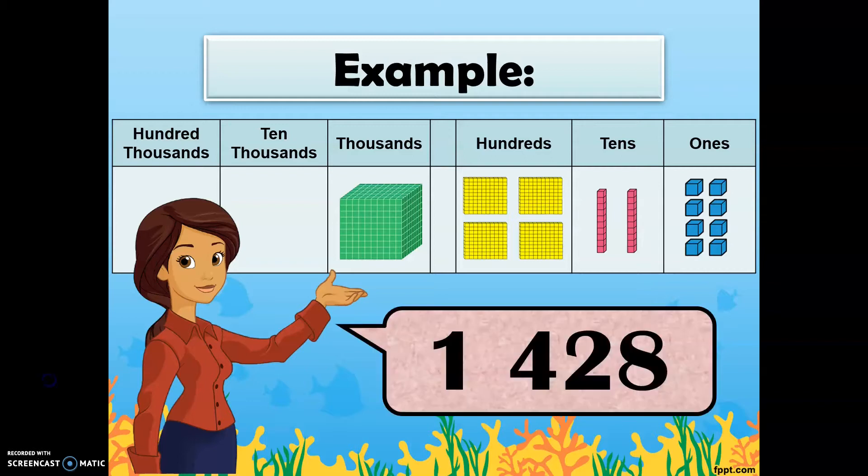And that will be 1 space 4 2 8. As you can see, the digits 1 and 4 are separated by space since the digit 4 belongs to the ones period and the digit 1 belongs to the thousands periods as shown in the table above.